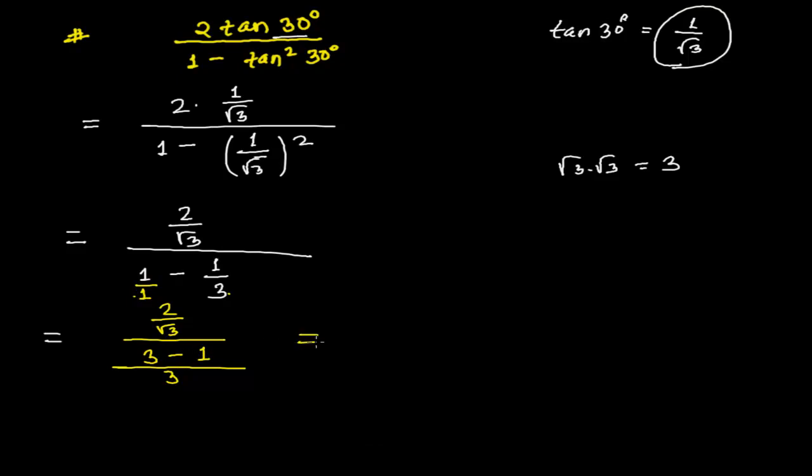Actually, this is simple. I'm just solving this fraction. And in the next step, what I'll get: I'll get 2 by √3 whole divided by 2 by 3.